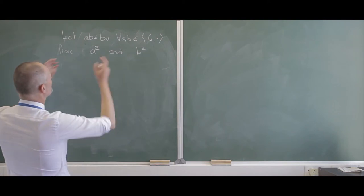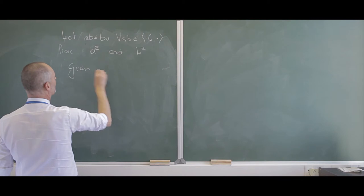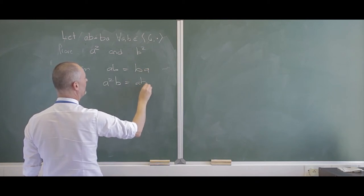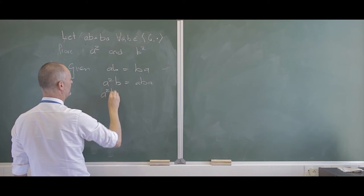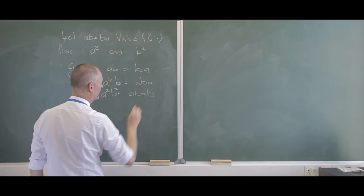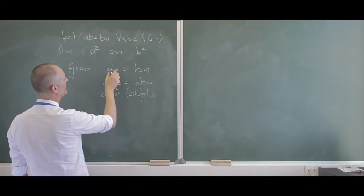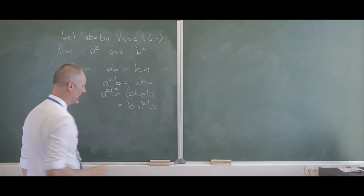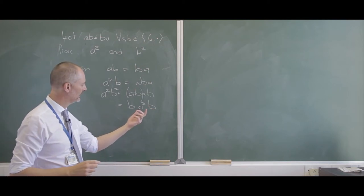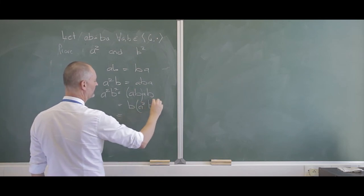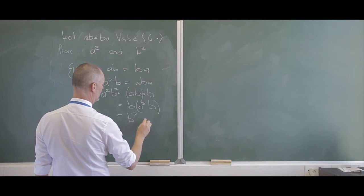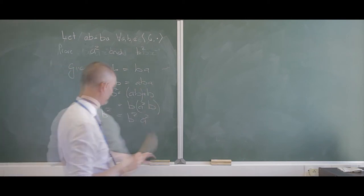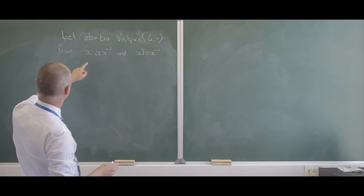Now a slightly more interesting one — show that A squared and B squared commute. Given AB equals BA, I have A squared B squared equals ABAB. Since AB equals BA, that becomes BABA, and with associativity that is B squared A squared. So A squared B squared equals B squared A squared — A squared and B squared commute.